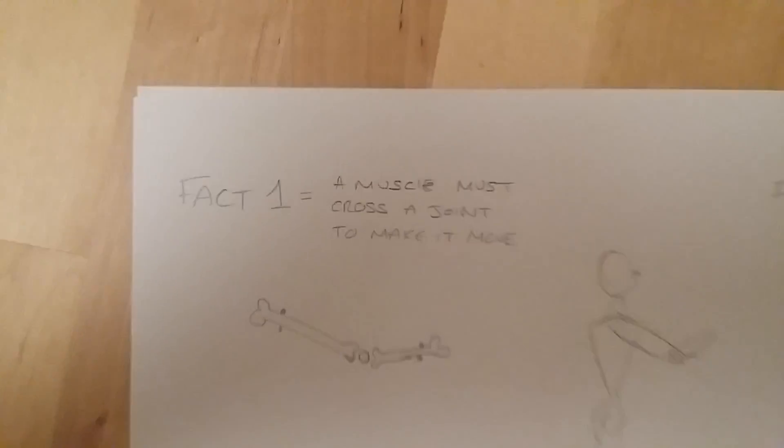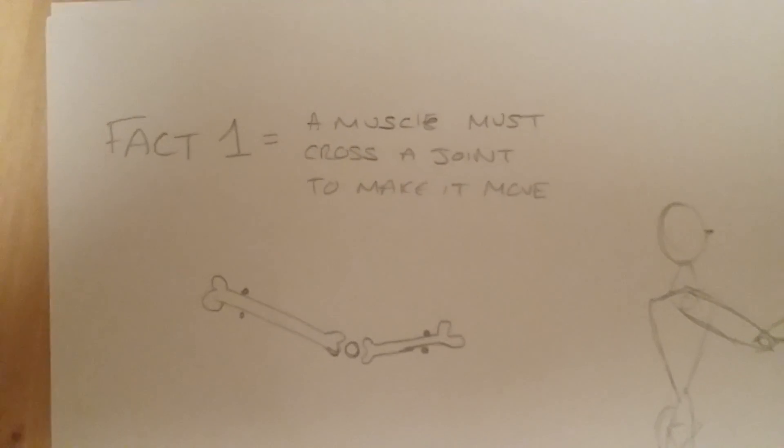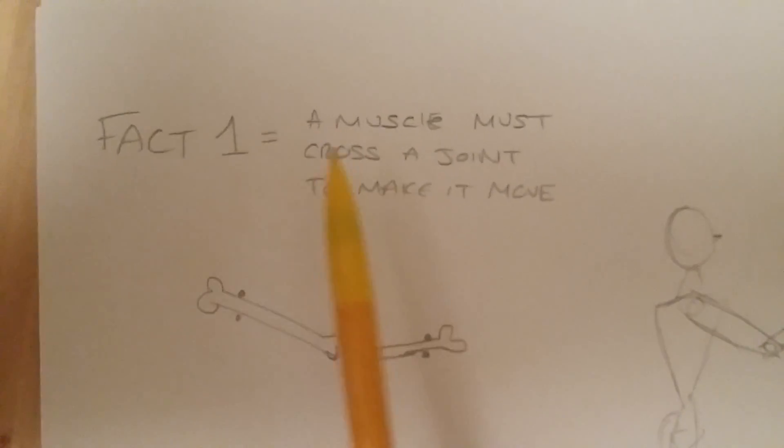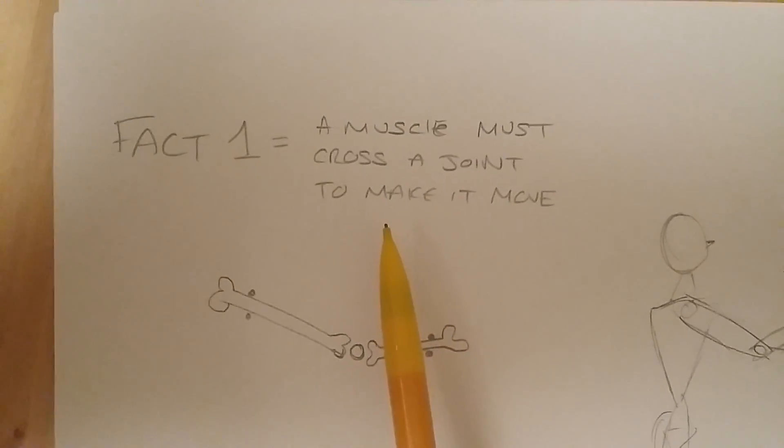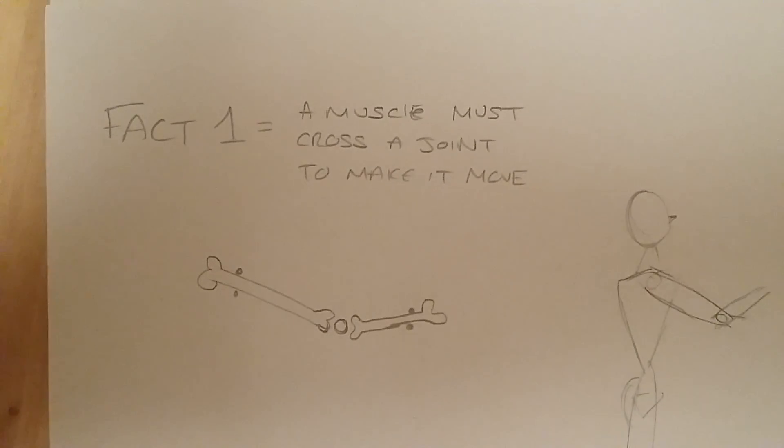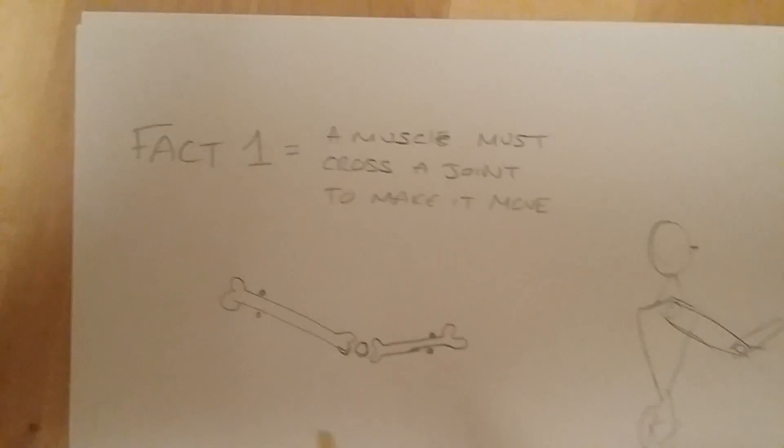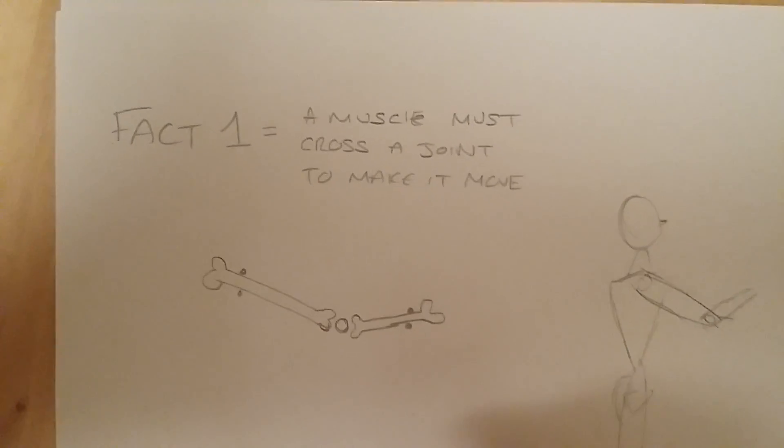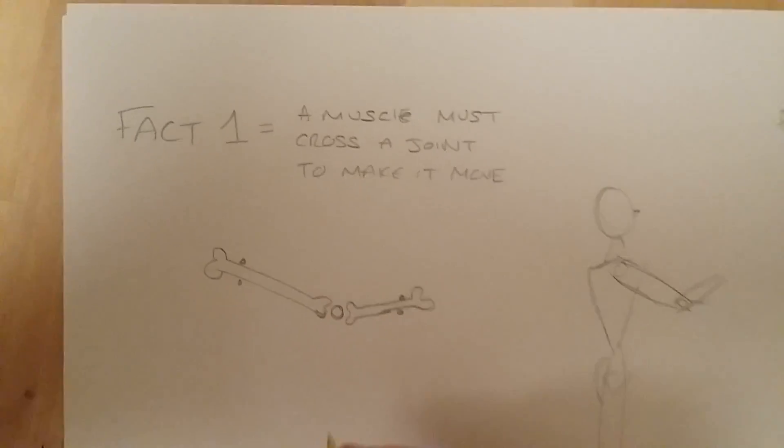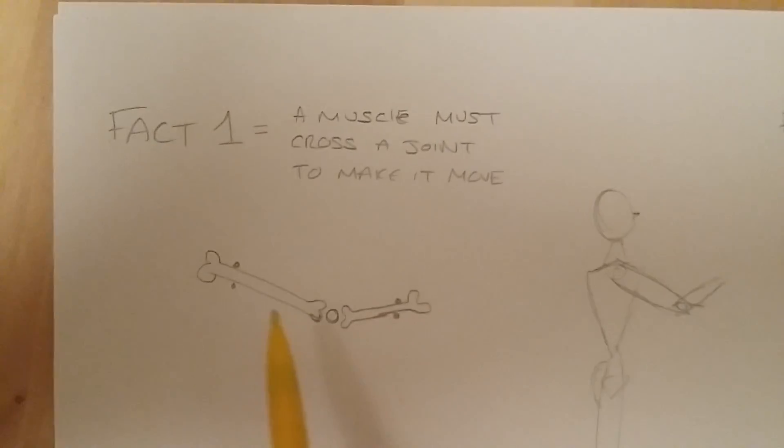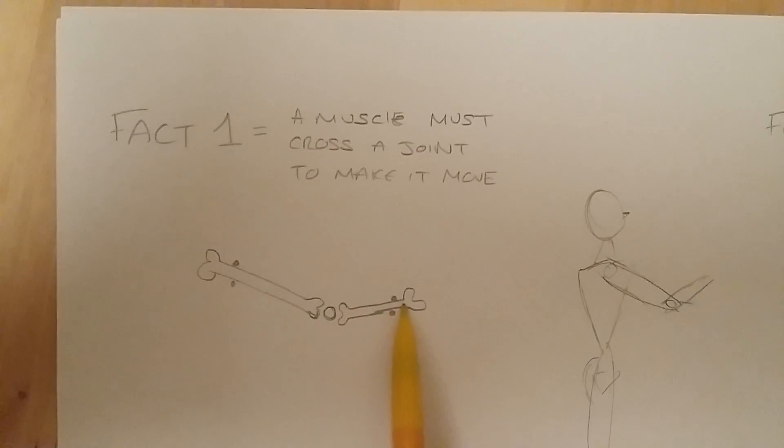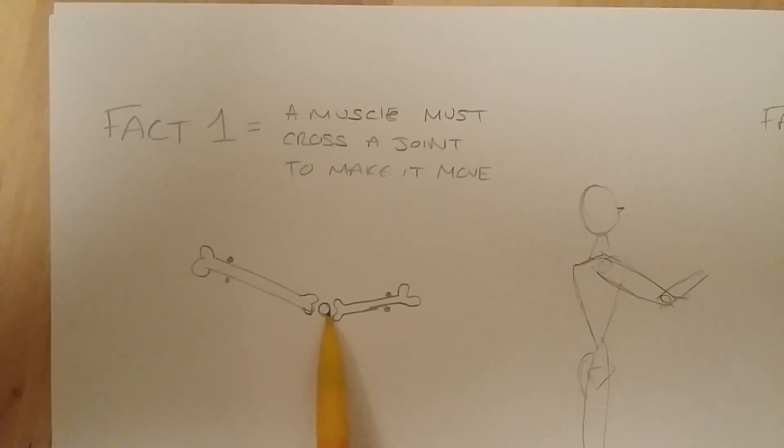First fact that you need to know to pass that level 2 A&P exam is that your muscle must cross a joint in order to make it move. Now most people get a little bit confused in relation to muscle origins and insertions. So first thing you need to know is that every muscle that makes a movement must cross a joint. So this is a joint.